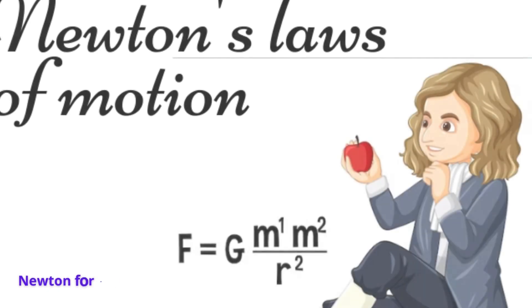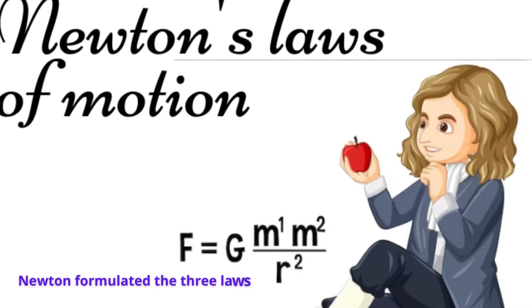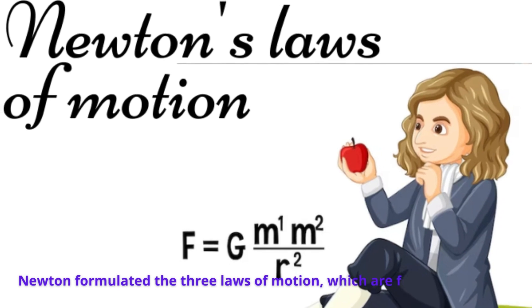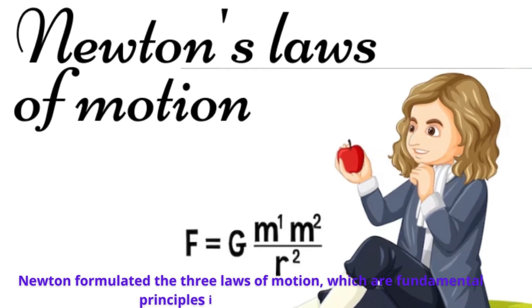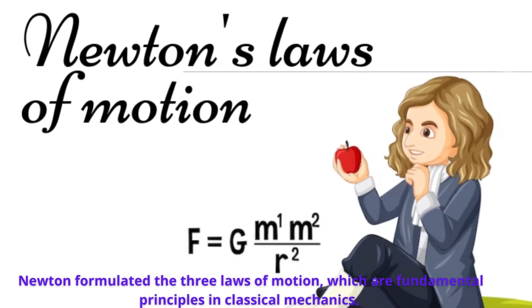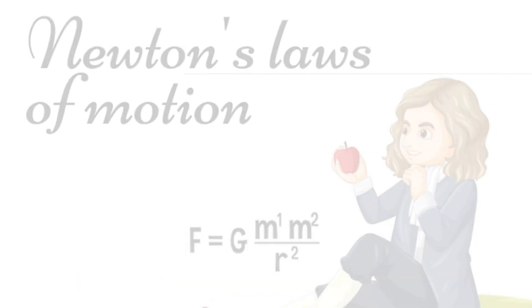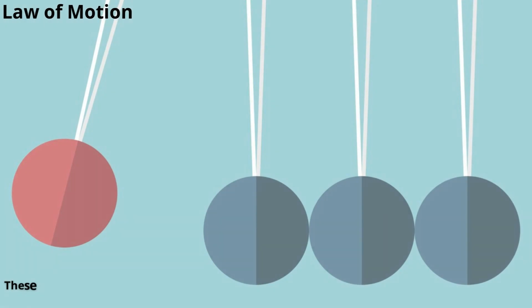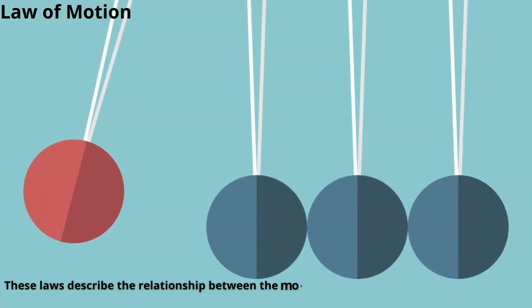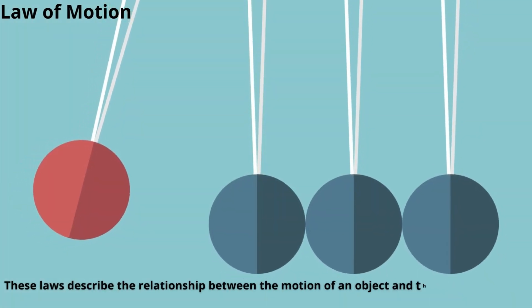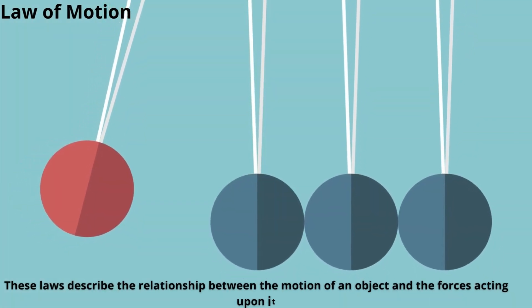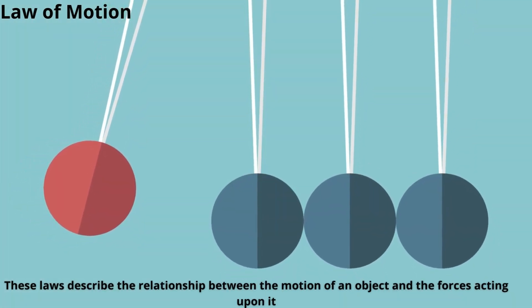Laws of motion. Newton formulated the three laws of motion, which are fundamental principles in classical mechanics. These laws describe the relationship between the motion of an object and the forces acting upon it.